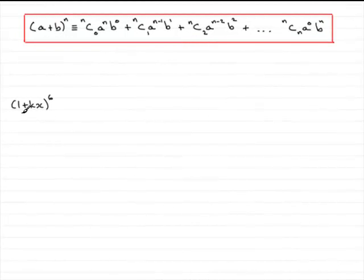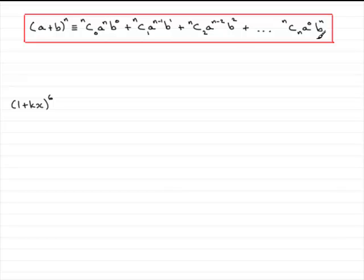In this question, we've got to expand 1 plus kx all to the power 6 in ascending powers of x. And to do this, what we need is the binomial expansion formula, which I've written out up here for you.